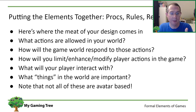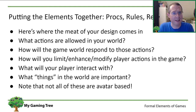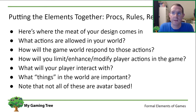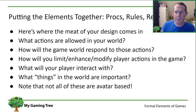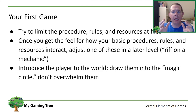What actions will you allow the player to take? How will the game world respond to those actions? How will you limit, enhance, or modify player actions throughout the game? In my top-down shooter example: can I shoot any enemy, or only certain ones? Do I need certain weapons or power levels for certain enemies? There are fascinating games like Ikaruga, which has a black-and-white mechanic where you can only shoot enemies of the opposing color, forcing you to creatively flip back and forth — an interesting rule that creates something unique.